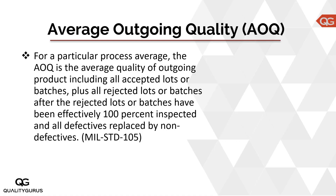So far we have talked about two important terms related to acceptance sampling, which are AQL and RQL. There is another important term which is Average Outgoing Quality. The AOQ is the average quality of outgoing product including all accepted lots or batches, plus all rejected lots or batches after the rejected lots have been